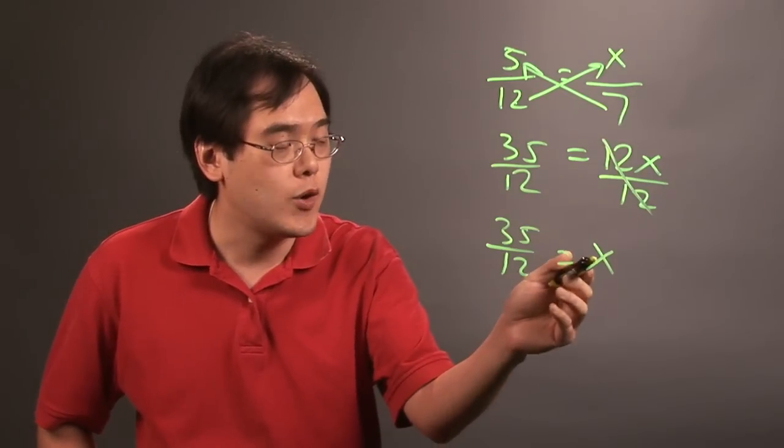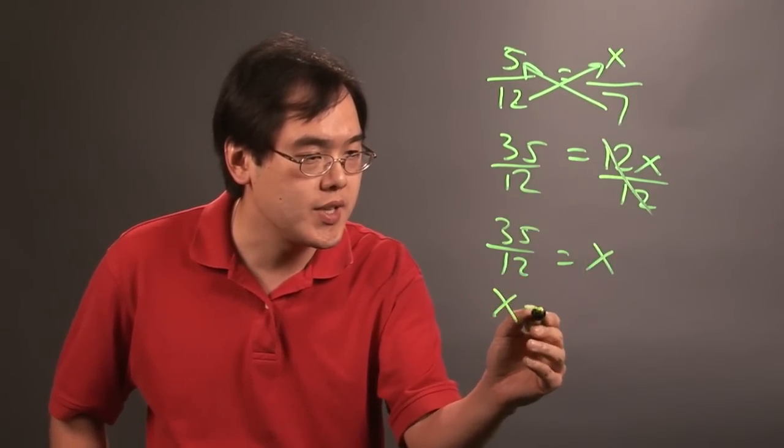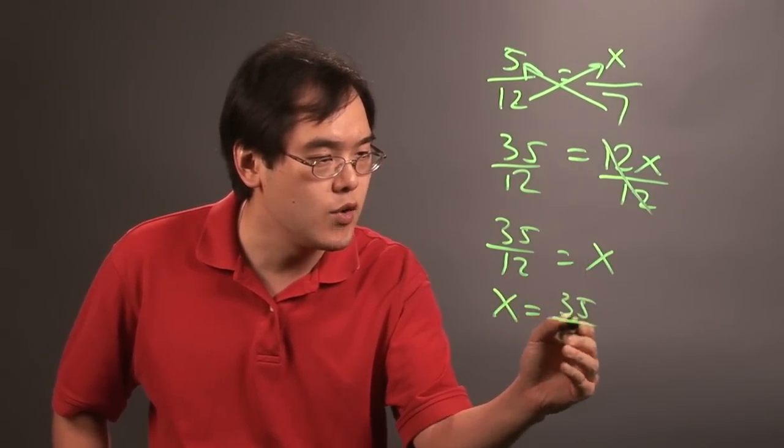Now, obviously, folks prefer the x written on the left side, so you can say that x is equal to 35 over 12.